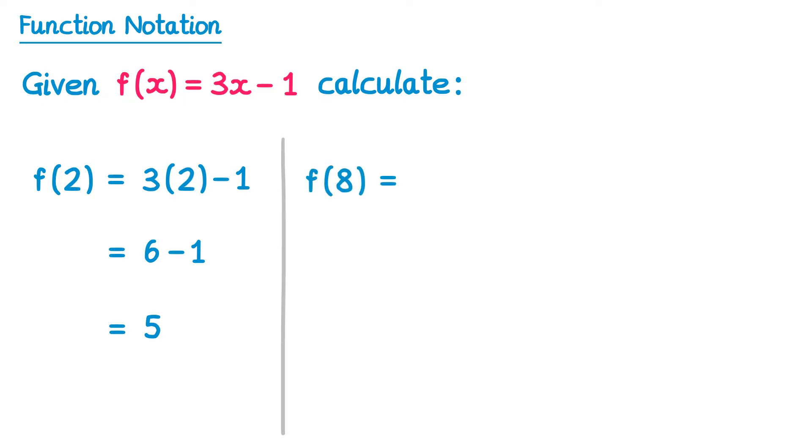Now let's try f of 8. So again we'll write down 3x minus 1 but change the x's to brackets. So 3 bracket minus 1. And take the input which is 8 and put that inside the bracket. So 3 times 8 is 24 and then minus 1. 24 minus 1 is 23.